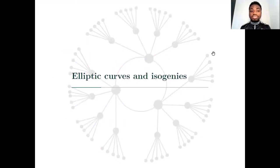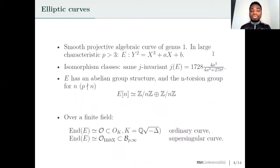So let's start with elliptic curves and isogenies. Elliptic curves are smooth projective algebraic curves of genus 1. In large characteristics, they are defined by a short Weierstrass equation. Isomorphism classes of elliptic curves are determined by j-invariants. Given an elliptic curve E, the set of points of this elliptic curve has an abelian group structure. For any integer n which is co-prime with the characteristic of the field of definition, the n-torsion group is a free group of dimension 2, written as Z over NZ direct sum with Z over NZ.